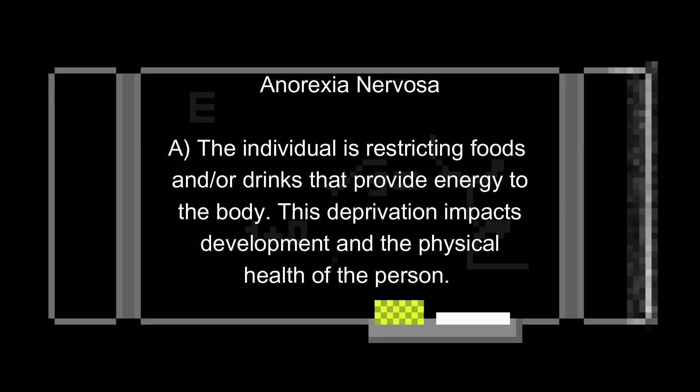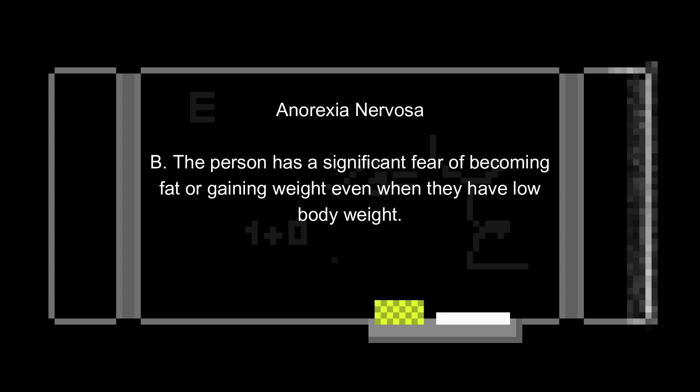In order to be diagnosed with anorexia nervosa, an individual has to have the following characteristics according to the DSM. Criterion A: the individual is restricting foods and or drinks that provide energy to the body. This deprivation is so significant for the individual's age that it impacts development and the physical health of the person. This deprivation leads to significantly low body weight, which is defined as weight that is much less than those around them. Criterion B: the person has a significant fear of becoming fat or gaining weight, even when they have a significantly low body weight.